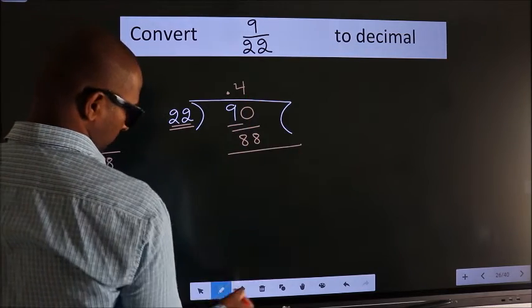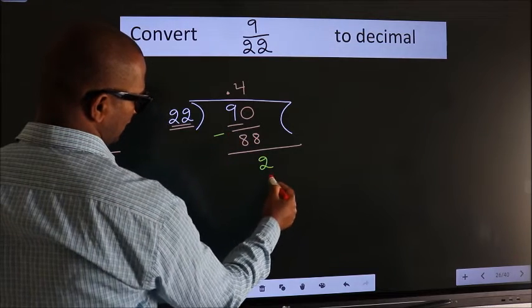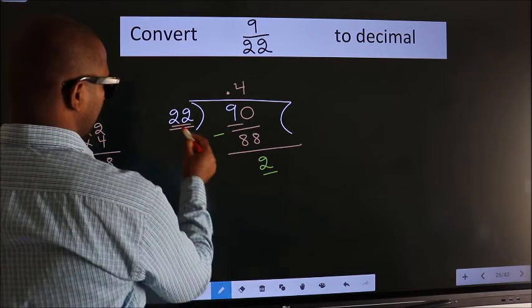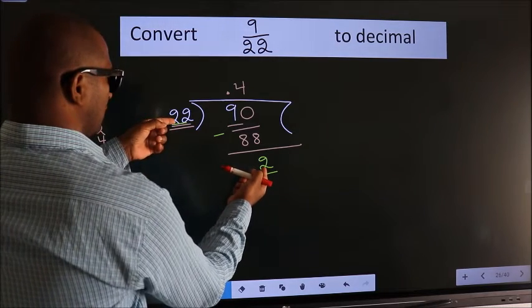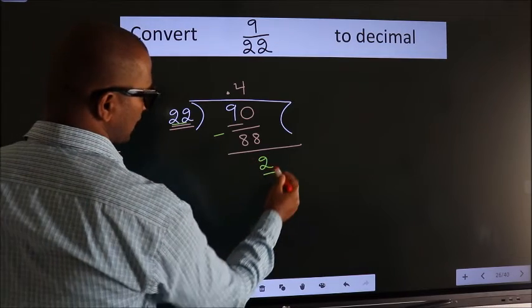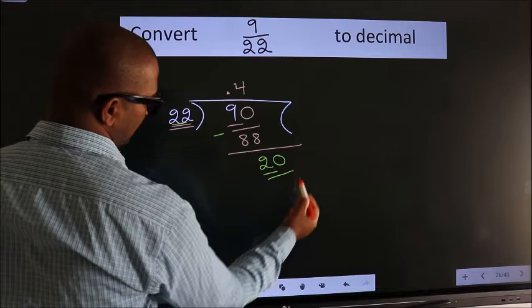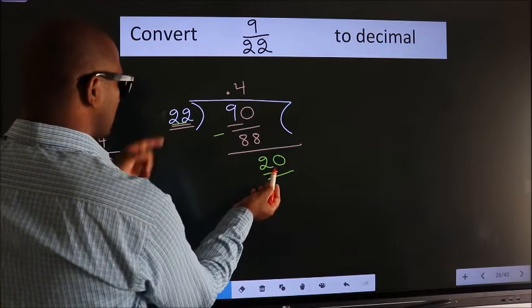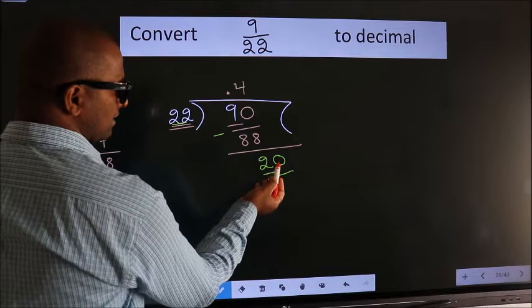Now we should subtract. We get 2. Here we have 2, here 22. 2 is smaller than 22. We already have the decimal, so this time we can directly take 0. So 20. 20 is still smaller than 22. We had already taken 1 zero.